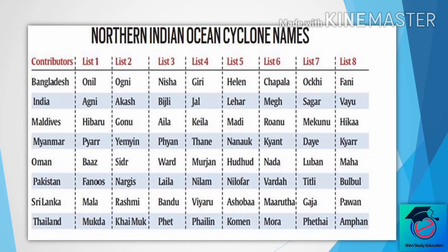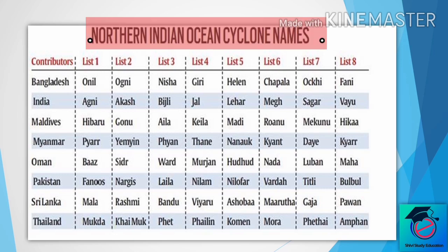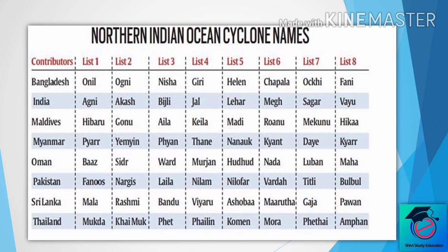Next, we will discuss about the Northern Indian Ocean cyclone names. These are all cyclone names which are only in the North Indian Ocean. The list includes cyclones named by Bangladesh, India, Maldives, Myanmar, Oman, Pakistan, Sri Lanka, and Thailand. This list will be very beneficial for you in exams when you recall the names.